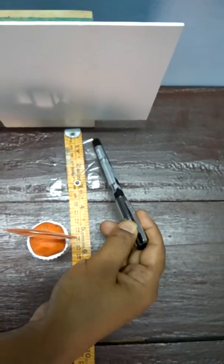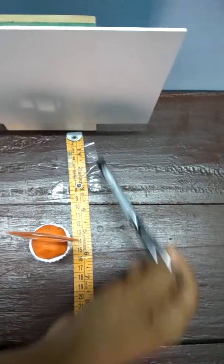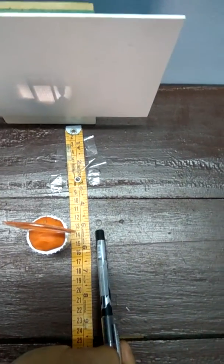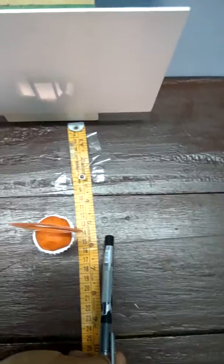So, this 14 cm distance between screen and the convex lens is known as focal length of this convex lens. Thank you.